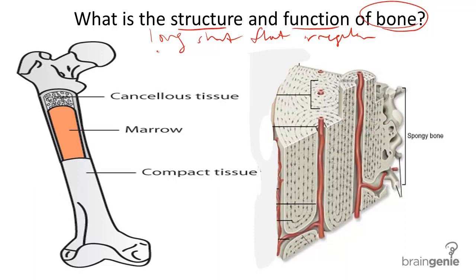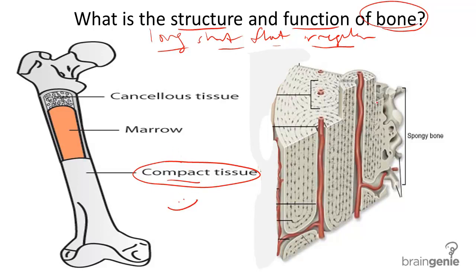All are structured somewhat similarly. All contain a dense outer layer called compact bone or tissue, for strength and protection. Tube-like structures called osteons run through the length of compact bone, and these provide oxygen and nutrients to bone cells.